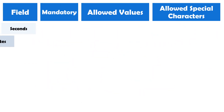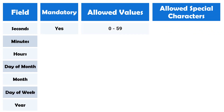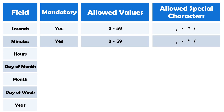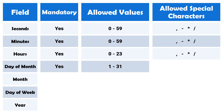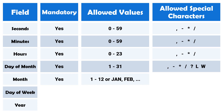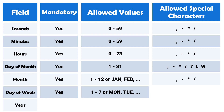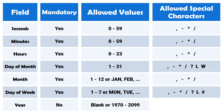Before the examples, here is a summary. Seconds field: mandatory, numbers 0–59. Minutes field: mandatory, numbers 0–59. Hours field: mandatory, numbers 0–23. Day of month field: mandatory, numbers 1–31. Month field: mandatory, numbers 1–12 or month abbreviations. Day of week field: mandatory, numbers 1–7 or day abbreviations. Year field: not mandatory — can be left blank, or numbers 1970–2099.